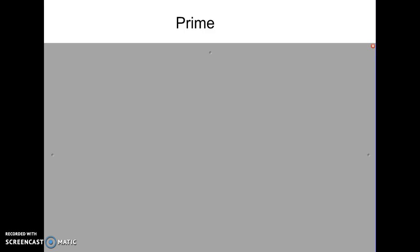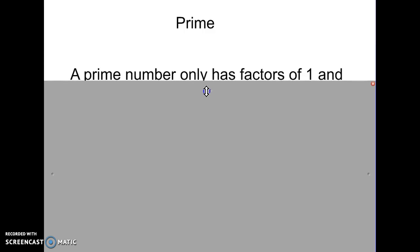The first kinds of numbers we're going to look at are prime numbers. So, what does prime numbers mean? What is the definition of a prime number? A prime number only has factors of one and itself.